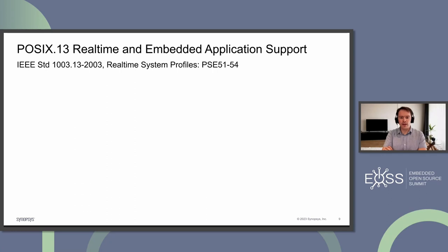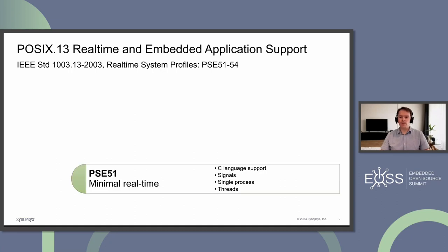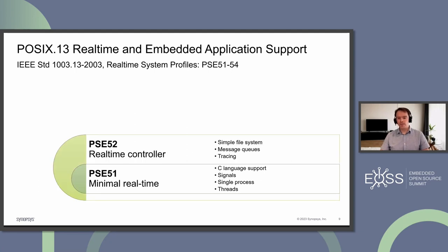The simplest PSE 51 profile is meant for very small embedded devices with a single processor — sensors or control devices with no user interaction, for example. It allows using pthreads, likely mapped onto the underlying RTOS tasks, signals, and communication between threads, and also relies on a C library for basic primitives. PSE 52 extends PSE 51 with simple file systems such as RAM disk or flash memory and message queues, with no additional hardware requirements — just a little bit richer software functionality.